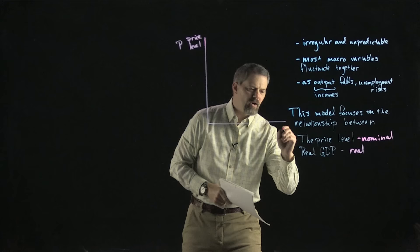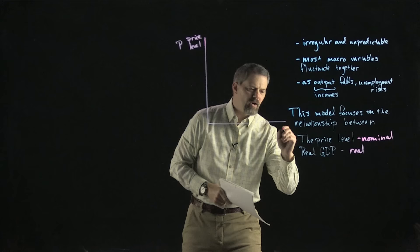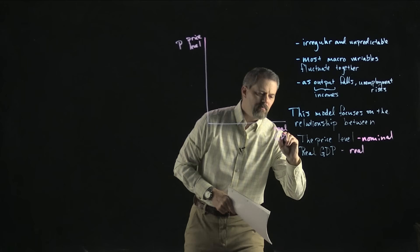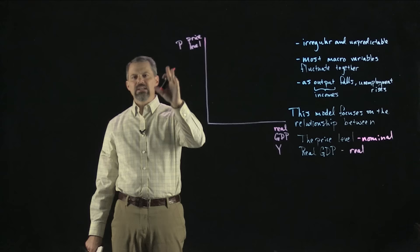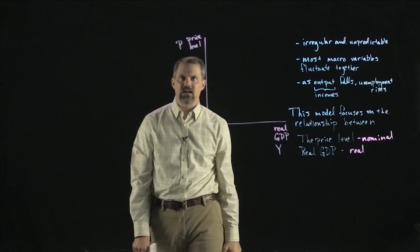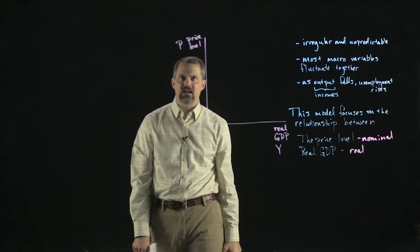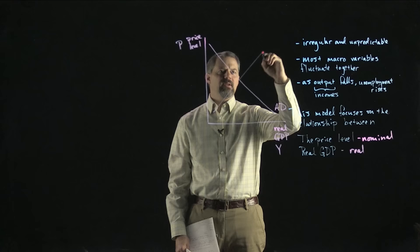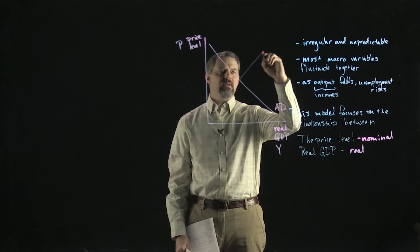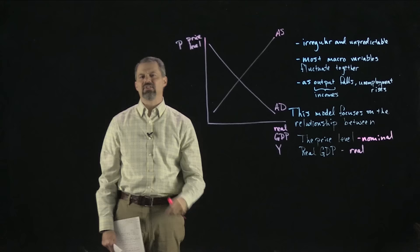On the horizontal axis we put real GDP — Y, as in Y equals C plus I plus G plus net exports. Once we get comfortable, I'll just call it P and Y, but remember this is the total amount of goods and services bought and sold in the economy and the average level of all those prices. Our aggregate demand curve is going to be downward sloping, abbreviated AD, and our aggregate supply curve is going to be upward sloping, labeled AS. We'll see there are actually two different aggregate supply curves.